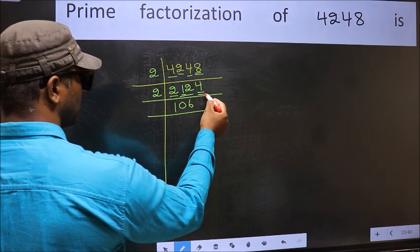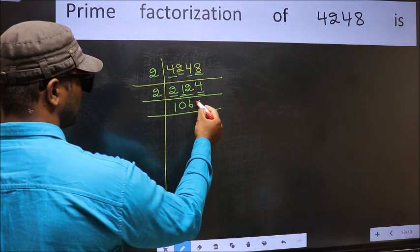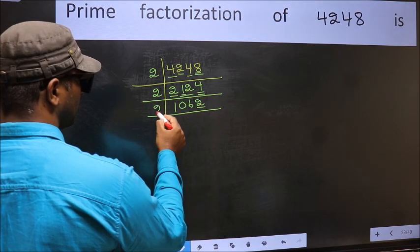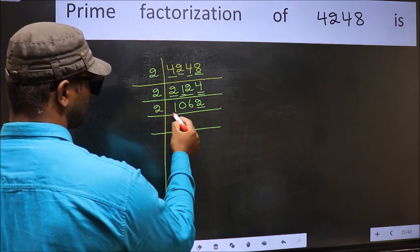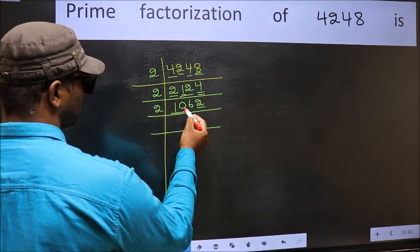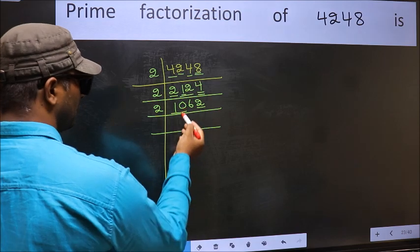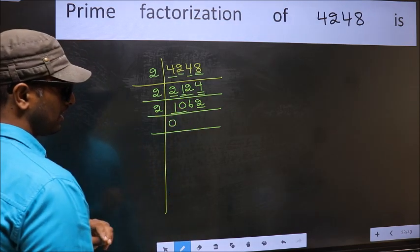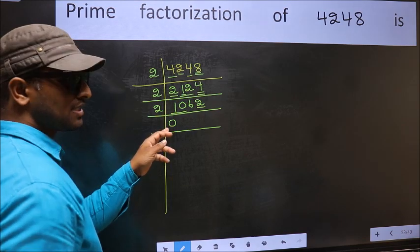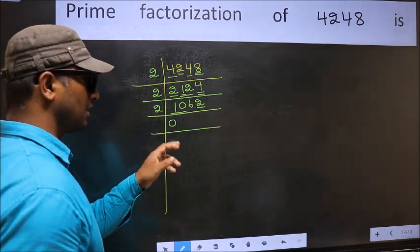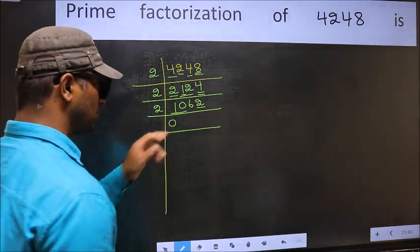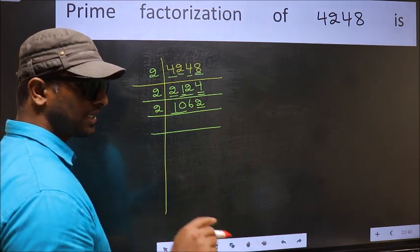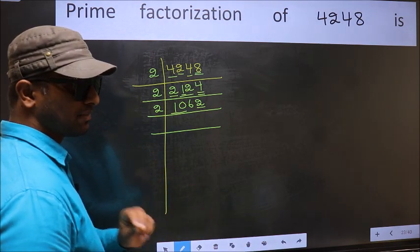But 0 at the start does not count, so no need to put 0 at the start. Anywhere else you are taking 2 numbers, compulsory put 0. Now, the last digit is 2, so take 2. First number 1 is smaller than 2, so take 2 numbers: 10. Whenever you are taking 2 numbers, compulsory put 0. But 0 at the start does not count, so no need to put 0 at the start. Anywhere else you are taking 2 numbers, 0 is must.